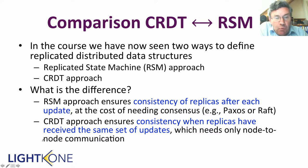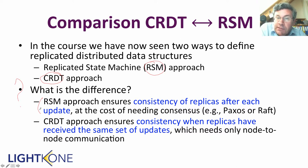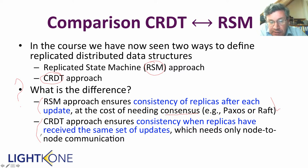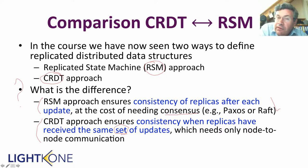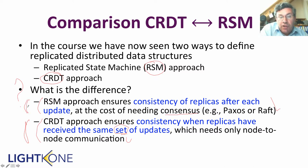To step back, we have now seen two ways in this course to define a distributed data structure: the replicated state machine (RSM) and the CRDT. The RSM approach ensures that replicas are equal to each other after each single update — consistency after each update is guaranteed through a consensus algorithm run after each update. Whereas the CRDT approach ensures consistency when the replicas have received the same set of updates. It's not guaranteed after each update, but it is guaranteed for replicas that have seen the same updates, requiring only node-to-node communication. In many cases this is good enough — it's a form of convergent consistency that requires much less synchronization than RSM.